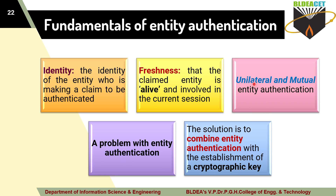Next is the problem with entity authentication, using the ATM example. The user wants to prove their identity using their PIN number — they insert the card and enter the PIN. After entering the PIN, another person comes, hijacks the ATM, and doesn't allow access to the amount. The user proved their identity and claimed authentication, but a third person hijacked and collected the amount. Is it possible to recover from such a problem? No. This is what we call the problem with entity authentication.